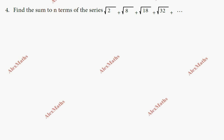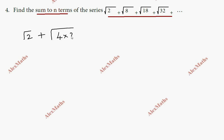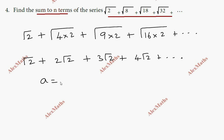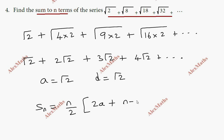Question number four: find the sum to n terms of the series. Rewriting the terms: √2 + √(4×2) + √(9×2) + √(16×2) + ... = √2 + 2√2 + 3√2 + 4√2 + ... This is an arithmetic progression with first term a = √2 and common difference d = √2. The formula is S_n = n/2 × (2a + (n−1)d).